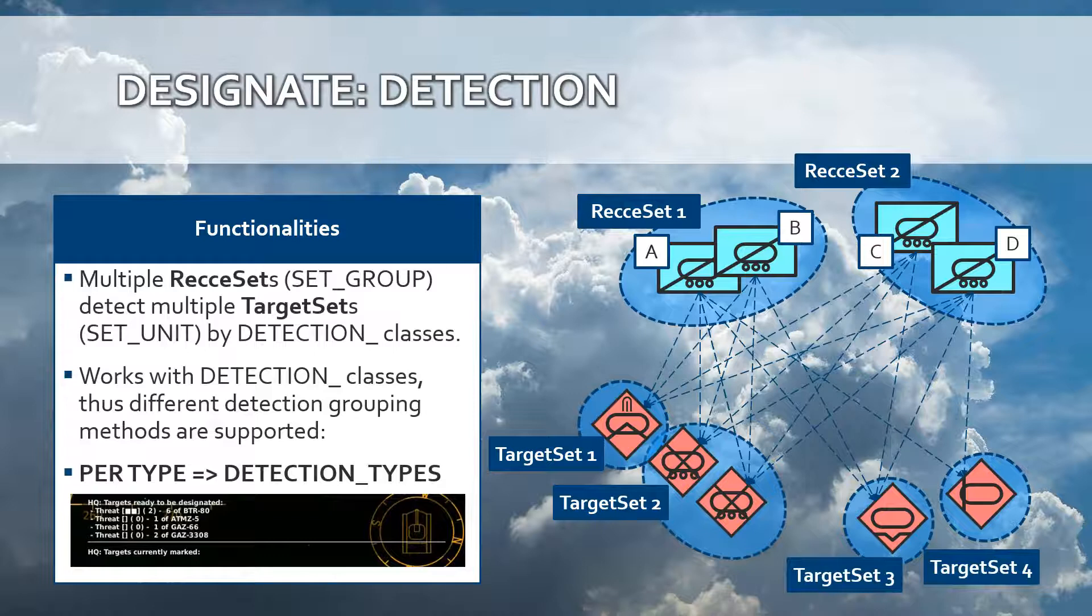A bit more advanced is the DetectionTypes class that groups the detected targets per type. Once the same type has been detected within a group, the reconnaissance vehicles will group the detected targets per type. So you have here a target set 1, target set 2 containing 2 detected targets, target set 3 and 4.